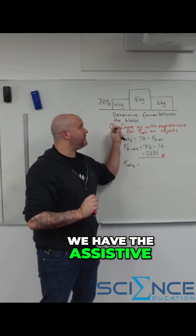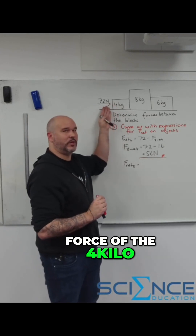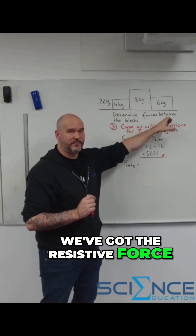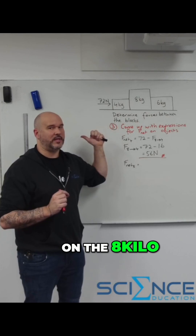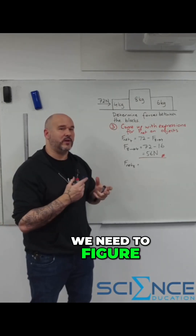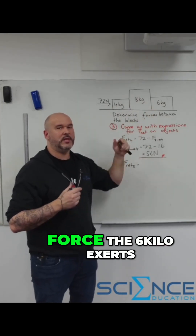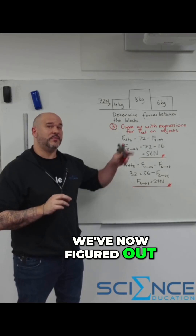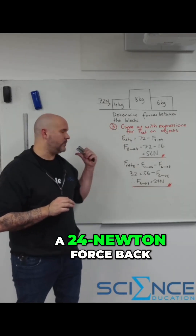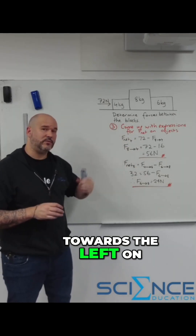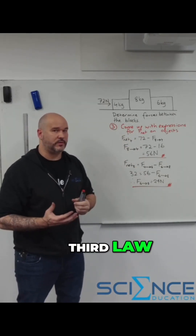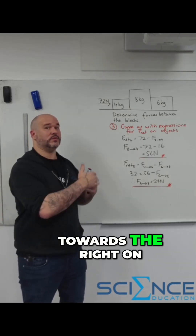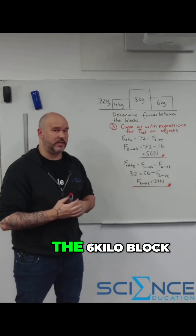For the 8 kg block, we have the assistive force of the 4 kg block exerting 56 newtons on it. We've got the resistive force — the 6 kg block pushing back on the 8 kg block. We need to figure out the value of that resistive force. The 6 kg block exerts a 24 newton force back towards the left on the 8 kg block, and because of Newton's third law, the 8 kg block also exerts a 24 newton force towards the right on the 6 kg block.